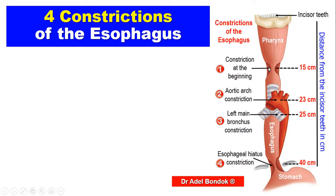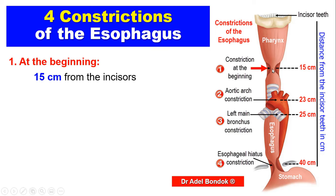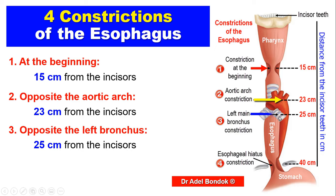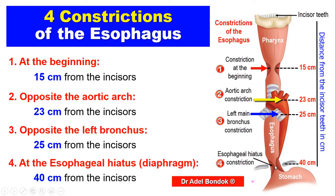The esophagus has four constrictions. The first is at its beginning — at the junction with the pharynx — 15 centimeters from the incisor teeth. The second is where it is crossed by the aortic arch, 23 centimeters from the incisors. The third is where it is crossed by the left main bronchus, 25 centimeters from the incisors. The fourth constriction is at the esophageal hiatus of the diaphragm, 40 centimeters from the incisor teeth.